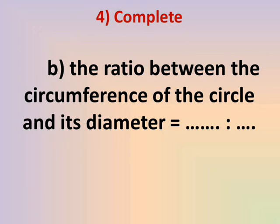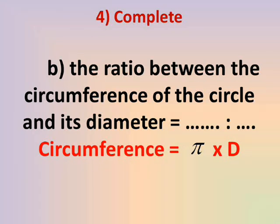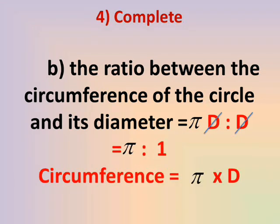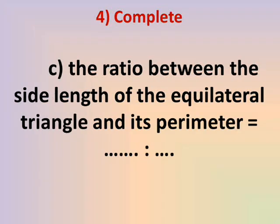Number B: The ratio between the circumference of the circle and its diameter. The circumference of a circle equals π × d, where d is the diameter. The ratio between the circumference and the diameter is πd to d. Cancelling d gives π to 1. So for any circle, this ratio is always π to 1.